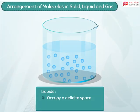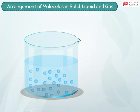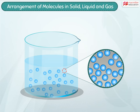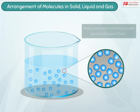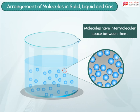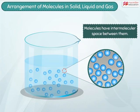Coming to liquids, we can see that they occupy a definite space, but they don't have any fixed shape. The molecules of a liquid substance are quite close to each other, but have a considerable amount of intermolecular space between them.